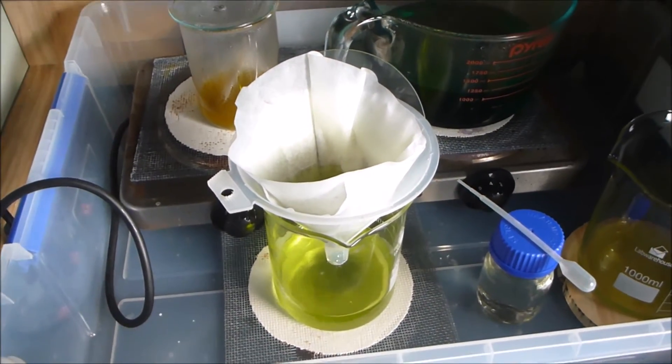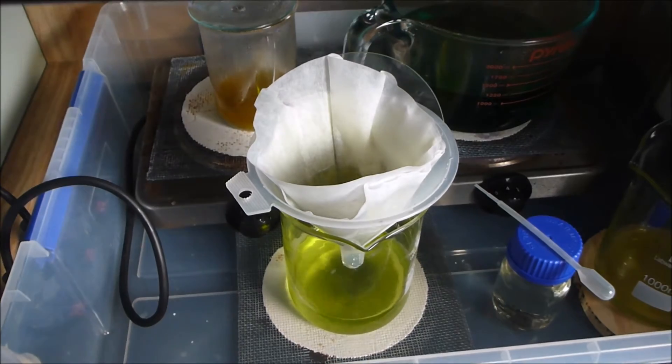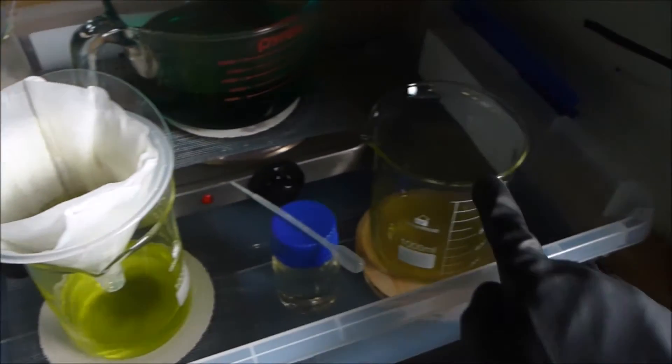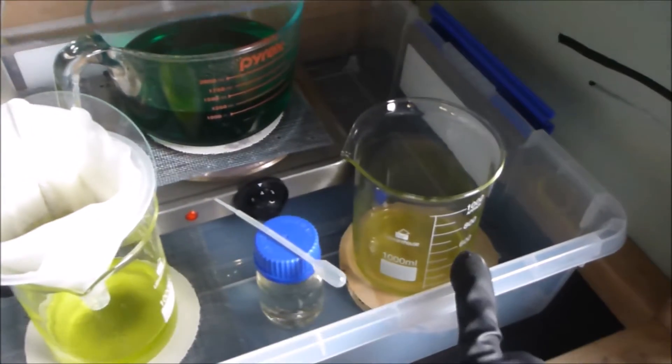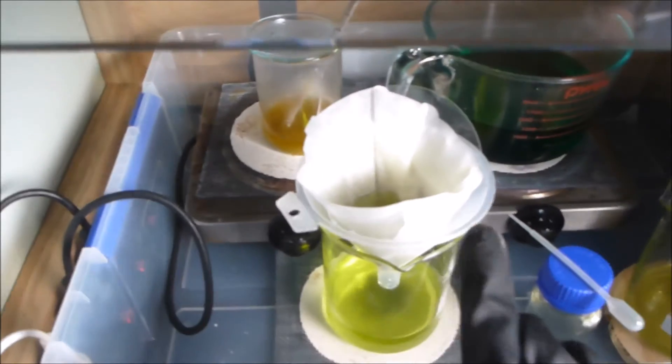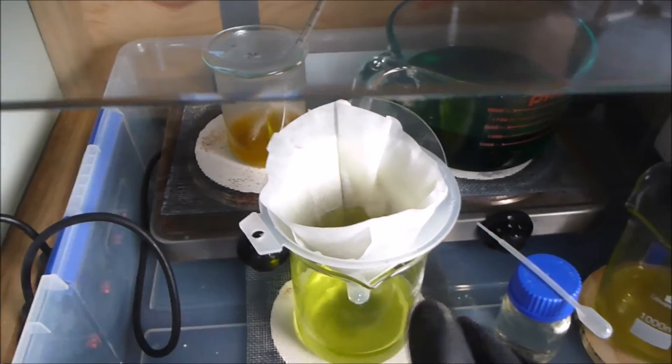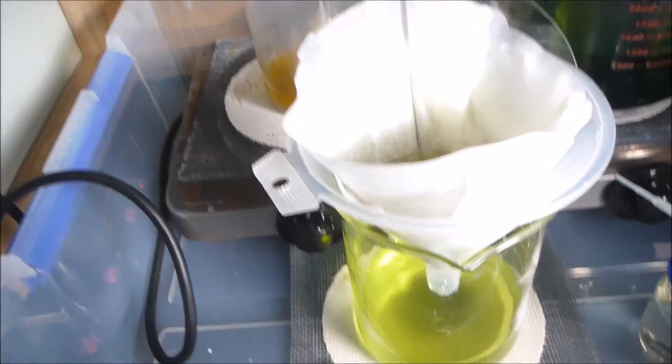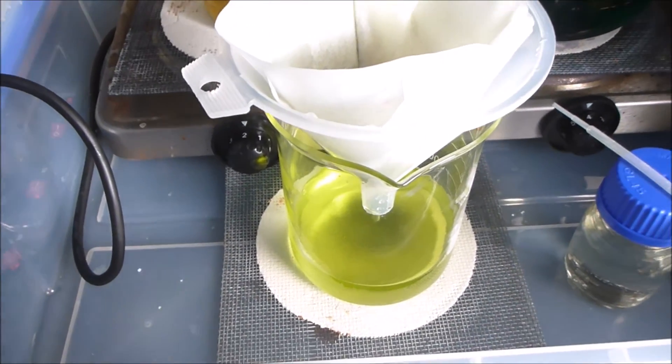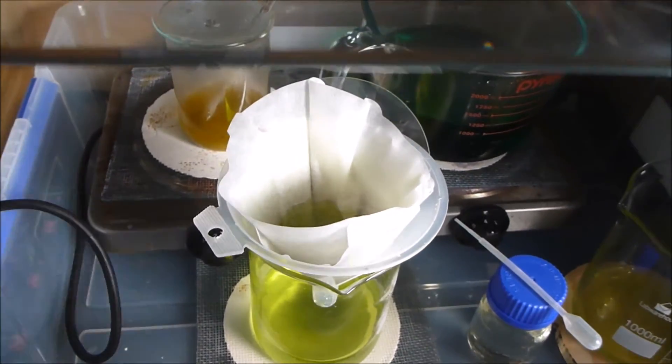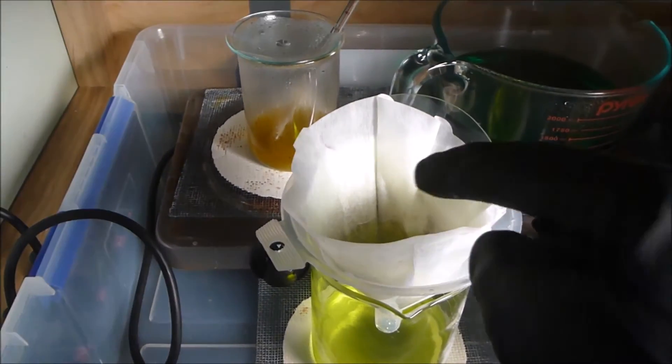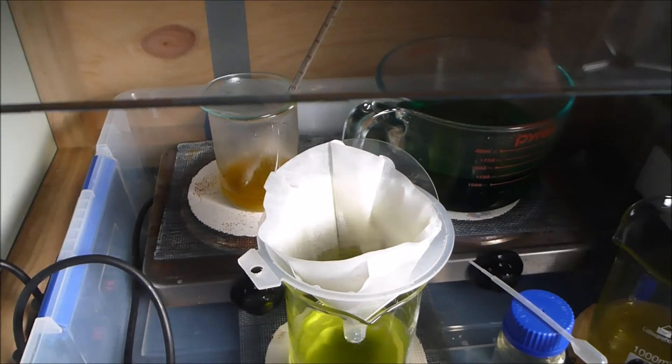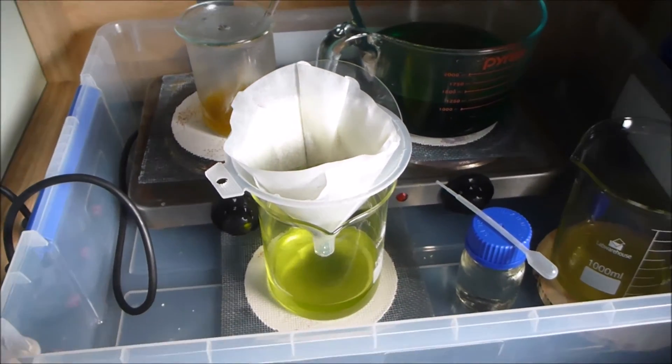What happens is the big holes in the coffee filter get plugged first by the big particles, but the small particles make it through. By the time you've done it two or three times, the holes are mostly plugged with the small particles as well. It's going very slow, as you can see - one drop at a time. You can see in the filter there it is catching a lot of that really fine stuff now.